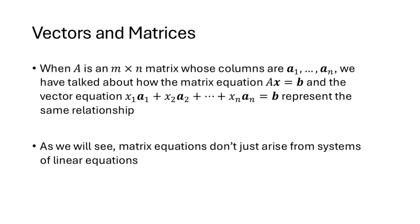We've been talking about the relationship between the matrix equation AX equals B and the vector equation X1A1 plus X2A2 plus XNAN equals B, where the A vectors are the columns of the matrix A, and we've talked about how those two equations represent the same relationship. But as we're going to see, matrix equations don't just arise from systems of linear equations.